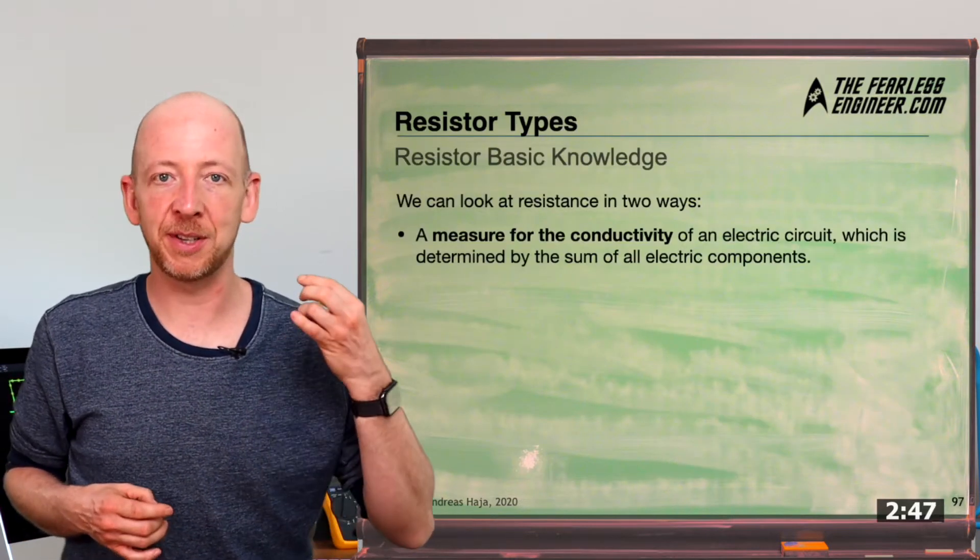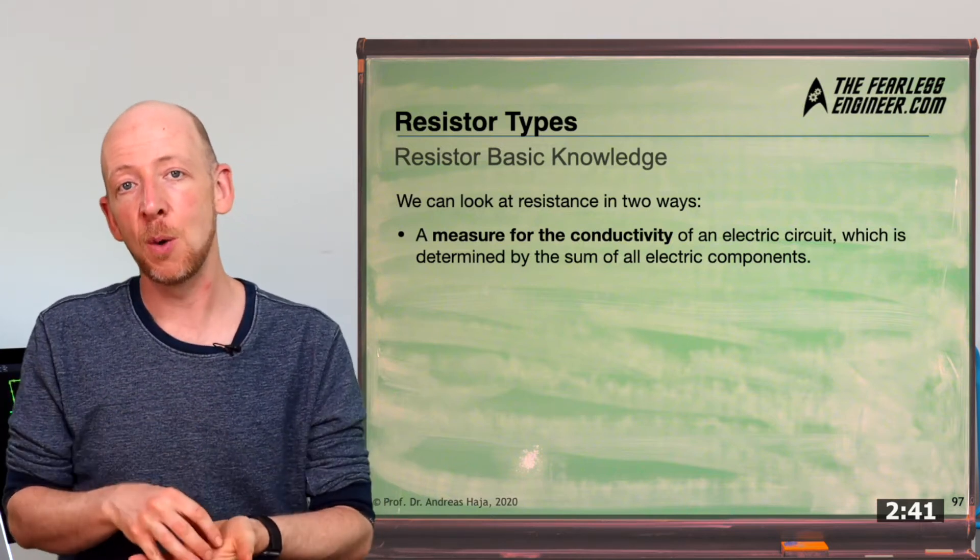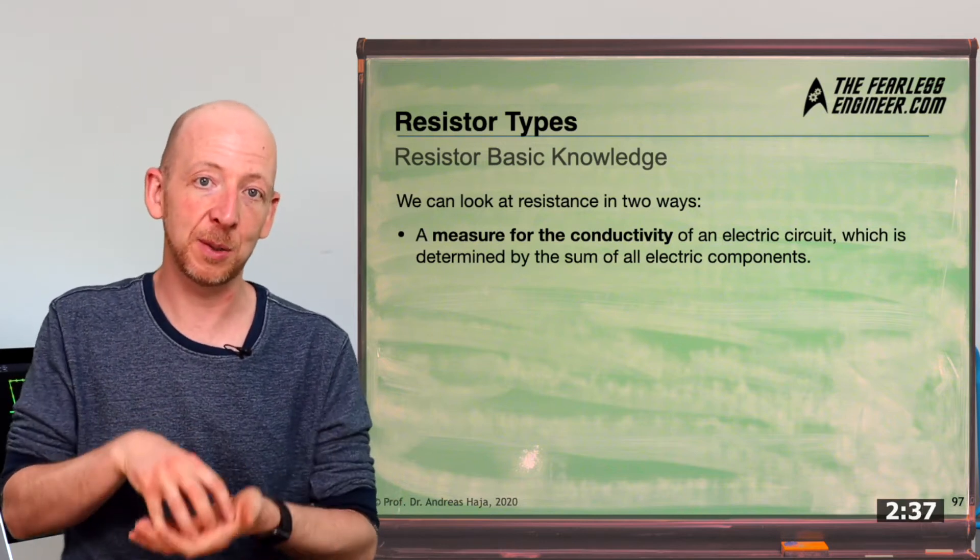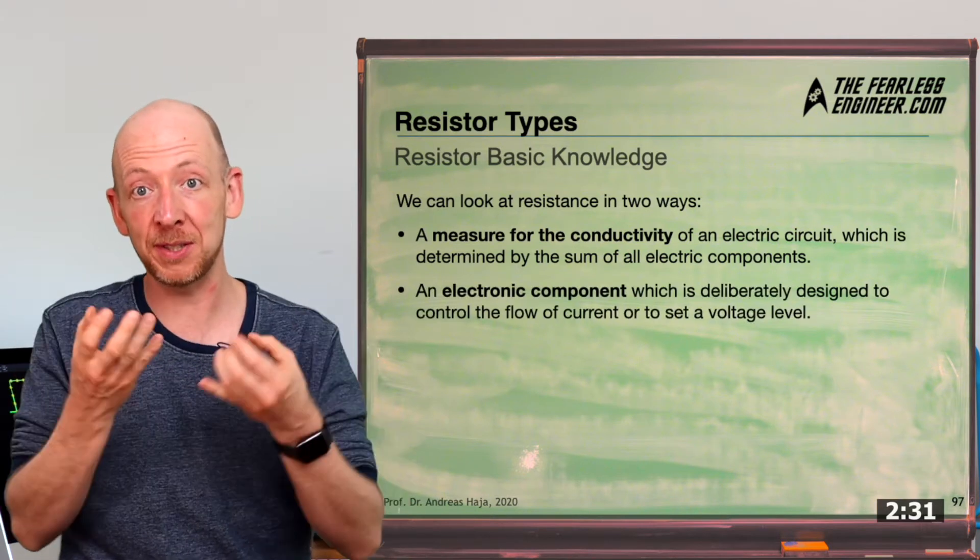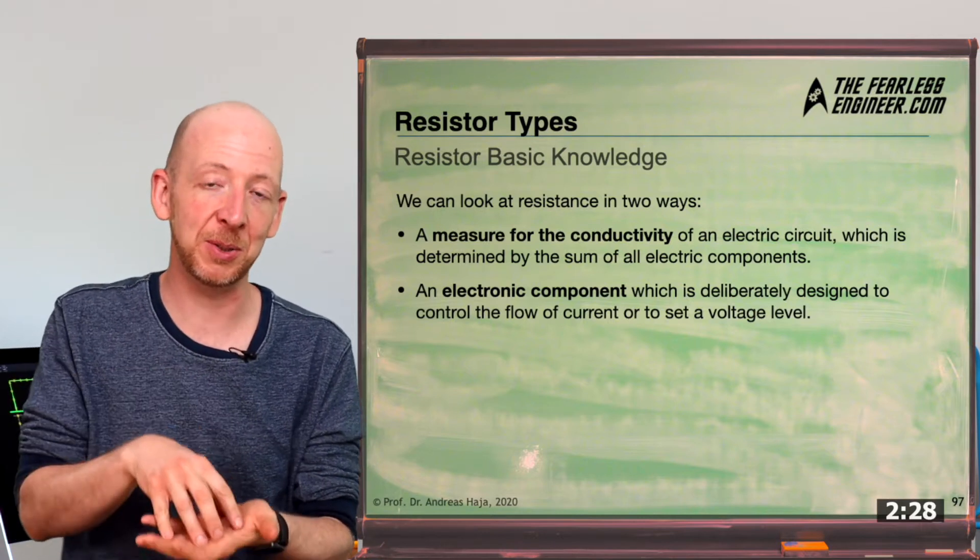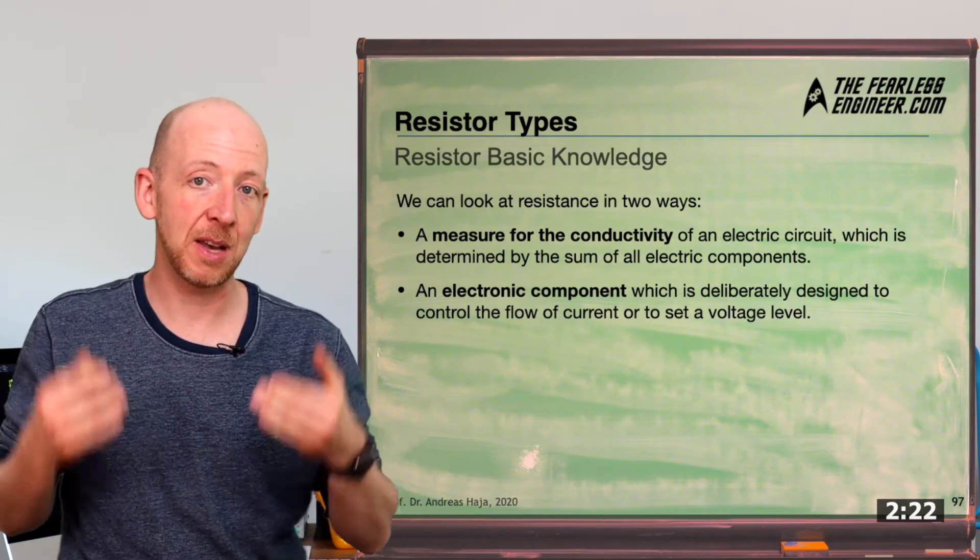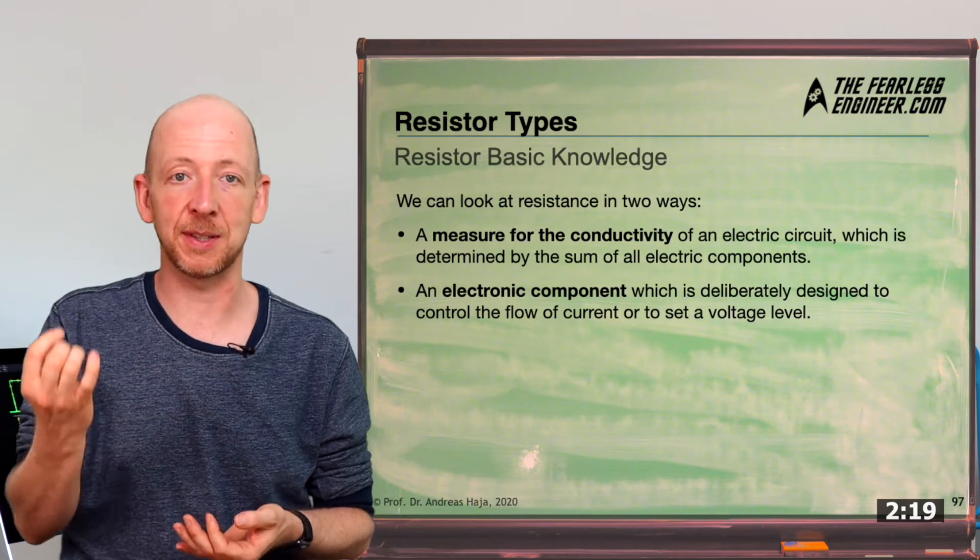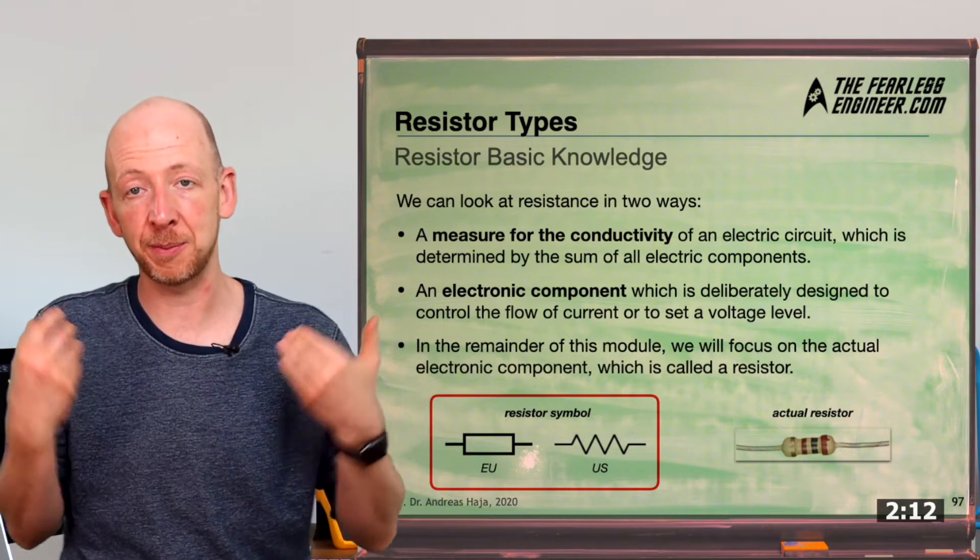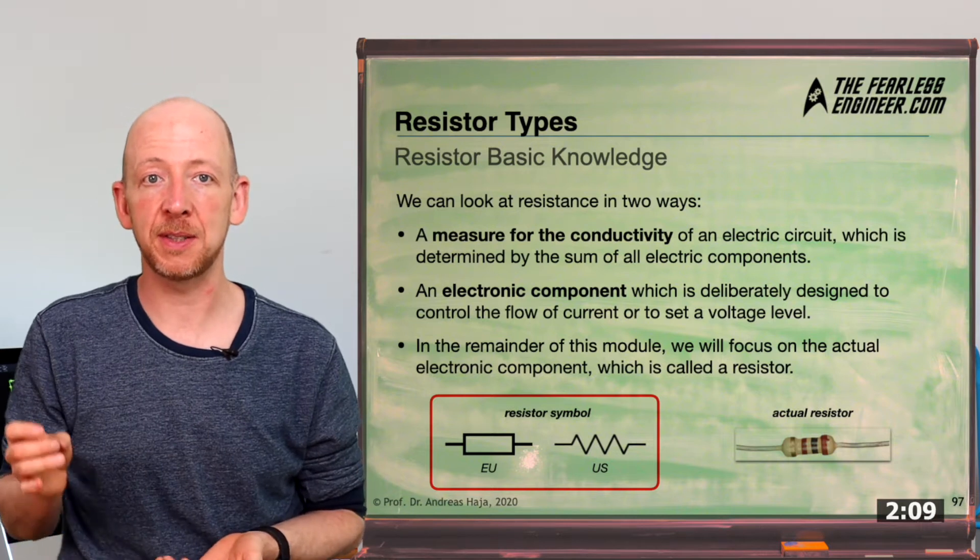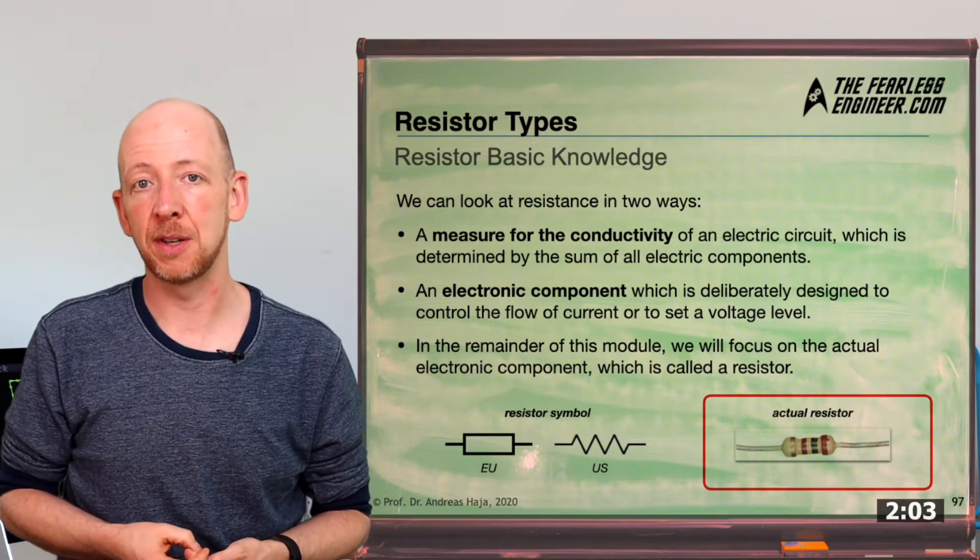There are two main ways to look at electrical resistance in electronics. The first way is to think of resistance as a measure of the conductivity of a circuit, which is basically the sum of all the electrical components it contains. The second meaning of a resistor or resistance is a component that is specifically made to control current or voltage in a circuit. At the bottom left, you can see two electrical symbols on the left side in the conventional called IEC, which is mainly used in the European Union, and on the right side, you can see the United States symbol.